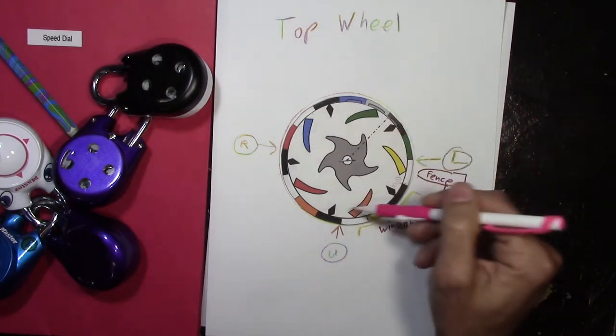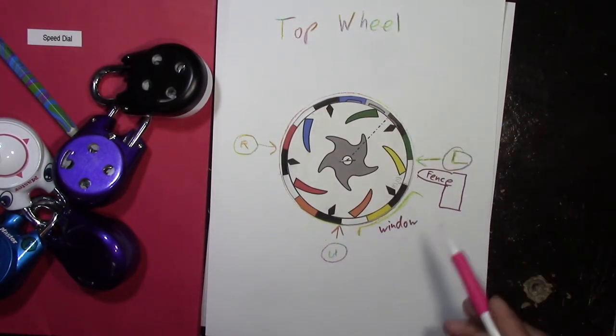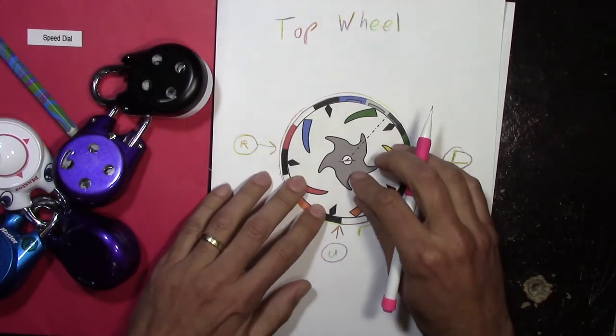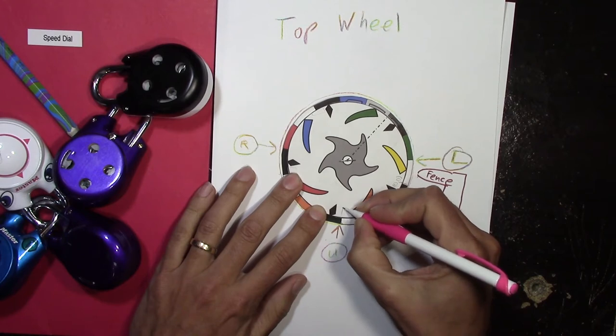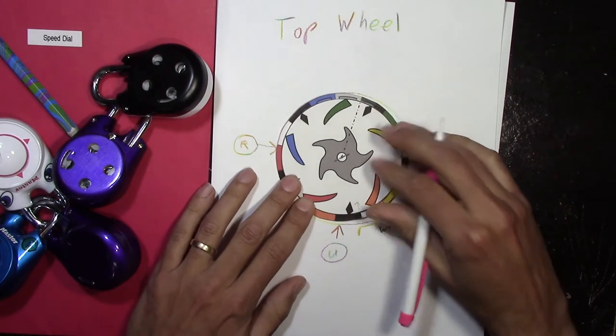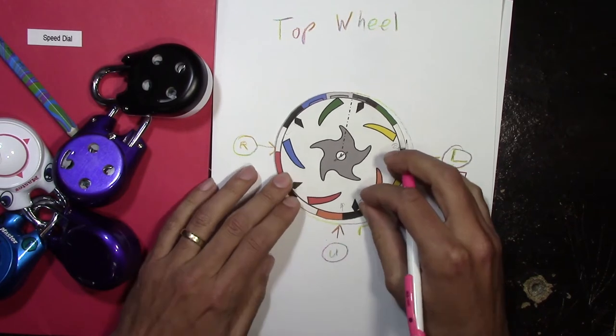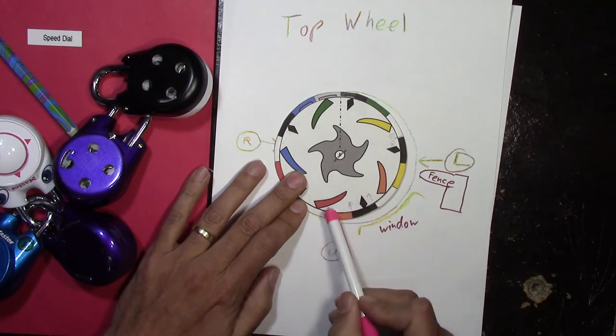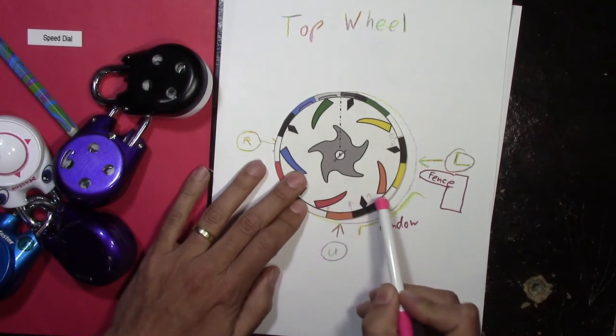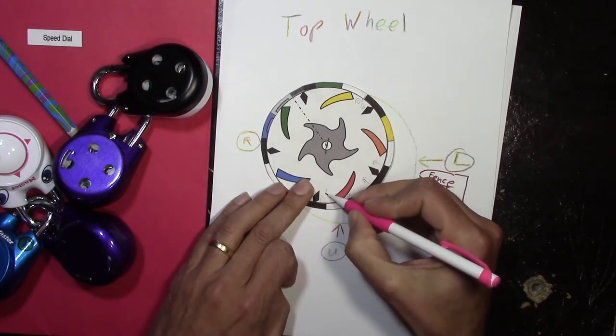So, this looks kind of complicated. But it's really simple. You can enter this wheel from here, from here, or from here. No matter where you enter on these three, you always exit here off the ramp.